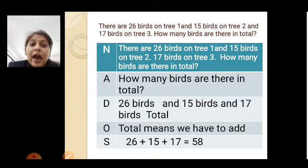So, what is asked here? Asked means how many birds are there in total? So, how many total birds are there? Now, after that what do we have to draw? Here there are three numbers. So, twenty-six birds, fifteen birds and seventeen birds. What do we have to do with them? We have to find the total.